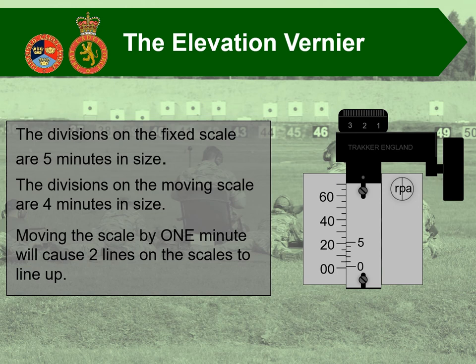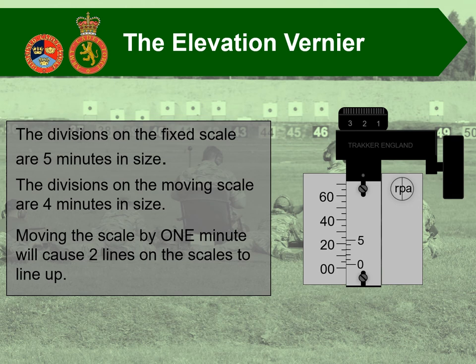By moving up 1 minute of angle, which is 4 clicks on the sight, that will cause the first line on the moving scale to line up with the first line on the fixed scale. To go up to 2 minutes, the second line on the moving scale will line up with the second line on the fixed scale. And so on with 3 minutes — the third line on the moving scale lines up with the third line on the fixed scale. For 4 minutes, the fourth line lines up with the fourth line on the scale.